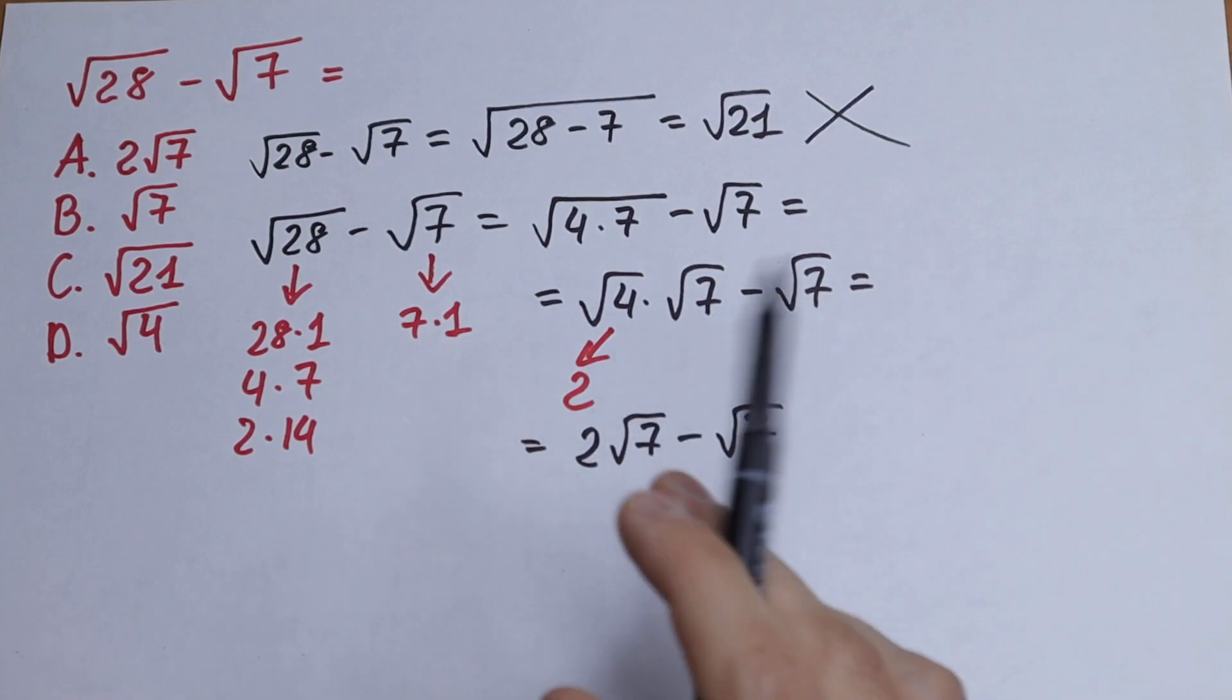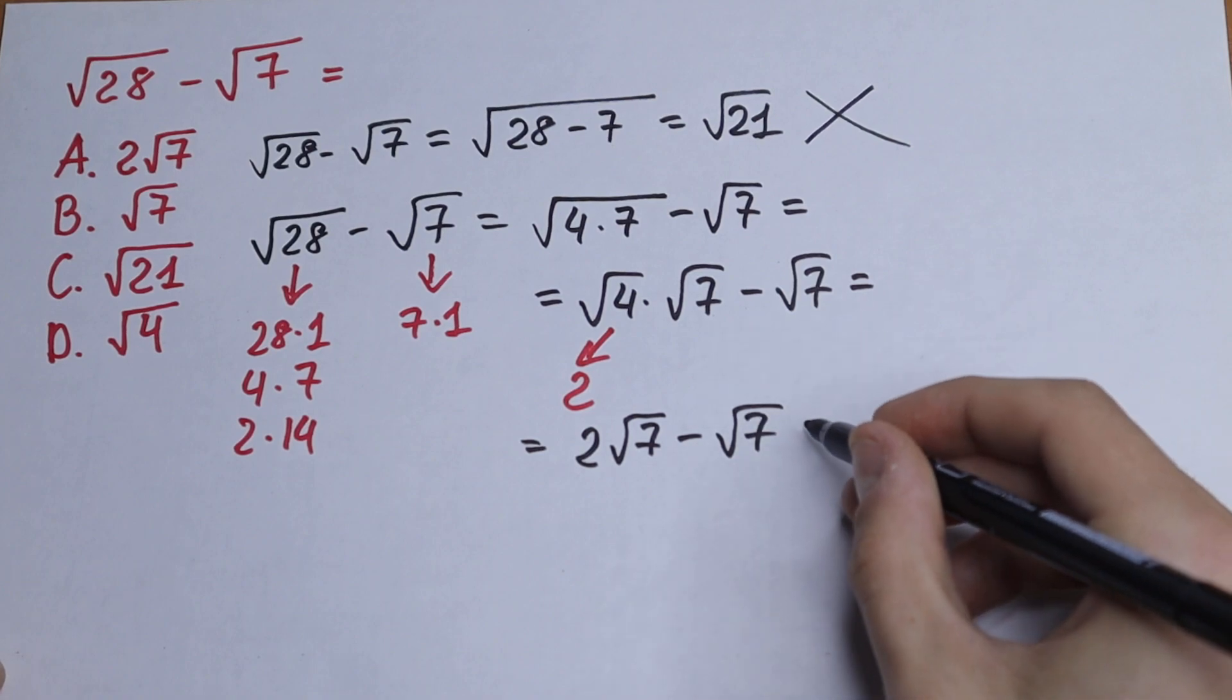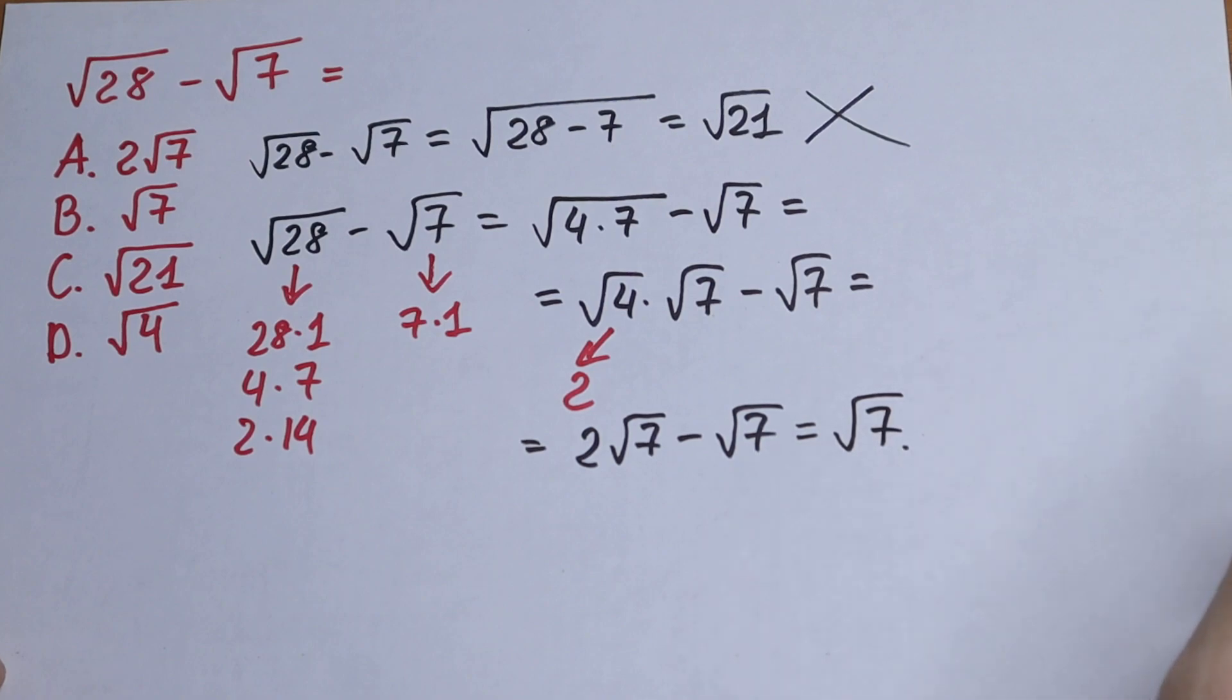And as you can see right here, we have 2 square root of 7 and we have 1 square root of 7. As a result, we will have square root of 7. And this is our answer, option B.